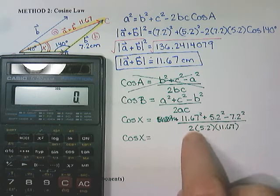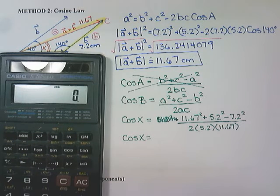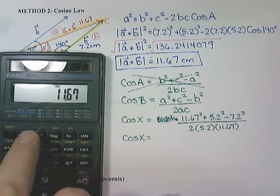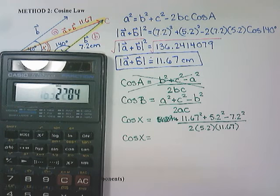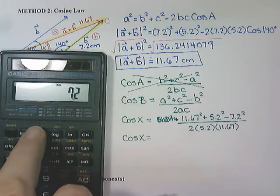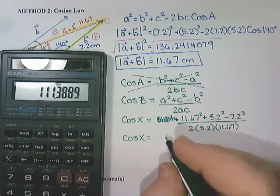I'm going to calculate the numerator here and then the denominator. So 11.67 squared plus 5.2 squared minus 7.2 squared is 111.3889.